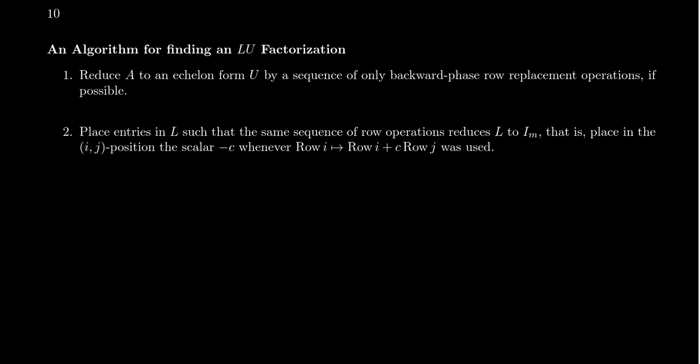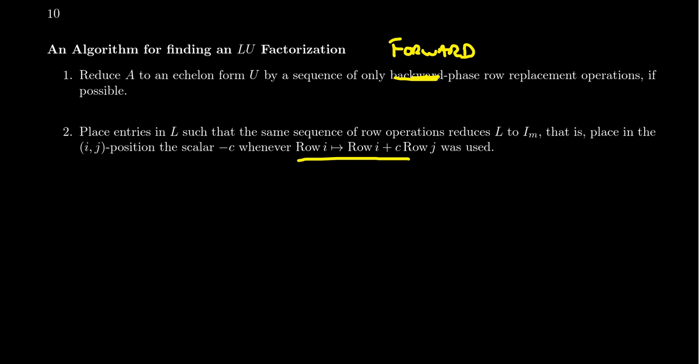The algorithm: start with matrix A and row reduce it to find the echelon form using only forward-phase row replacement operations — no interchange, no scaling whatsoever. Row reduce A into U. Then keep track of the row operations you did. For each replacement — row I transforms into row I plus C times row J — you put a negative C in the IJ position of L. You can do this at the same time as the row reduction.